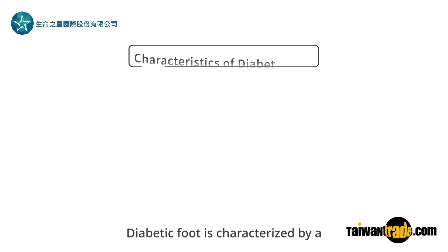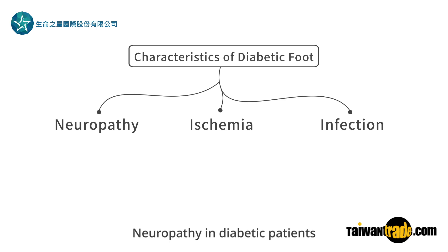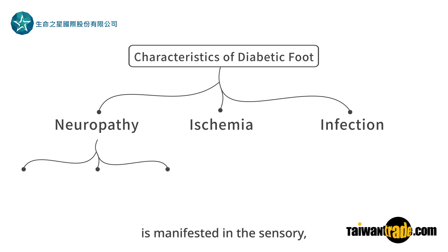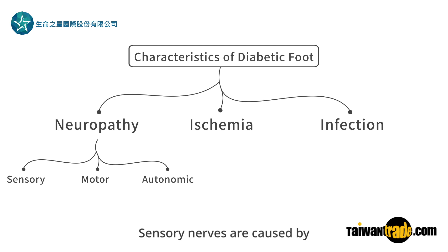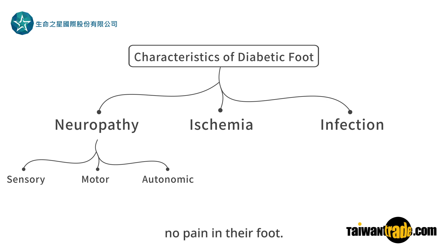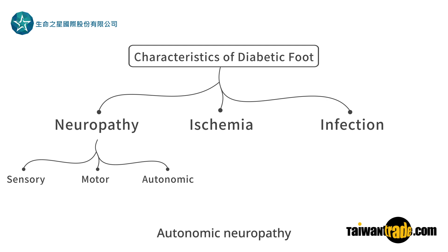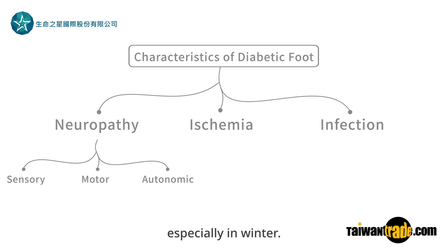Diabetic foot is characterized by a classical triad of neuropathy, ischemia, and infection. Neuropathy in diabetic patients is manifest in the sensory, motor, and autonomic forms. Sensory neuropathy causes calluses to form on the bottom of the foot, or from wearing shoes that are too narrow, resulting in a person feeling no pain in their foot. Motor neuropathy can easily cause foot muscle atrophy and foot deformities, causing joint disease indirectly. Autonomic neuropathy leads to diminished sweating, causing the overlying skin to become dry, especially in winter.